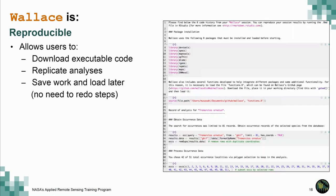Wallace is also reproducible, which is one of its most exciting features. R is running in the background and the code is being saved as you run it through the GUI. At the end, you're able to download this executable code, which allows you to replicate the analyses. It also allows you to save your work and load it later so you don't have to redo any steps.